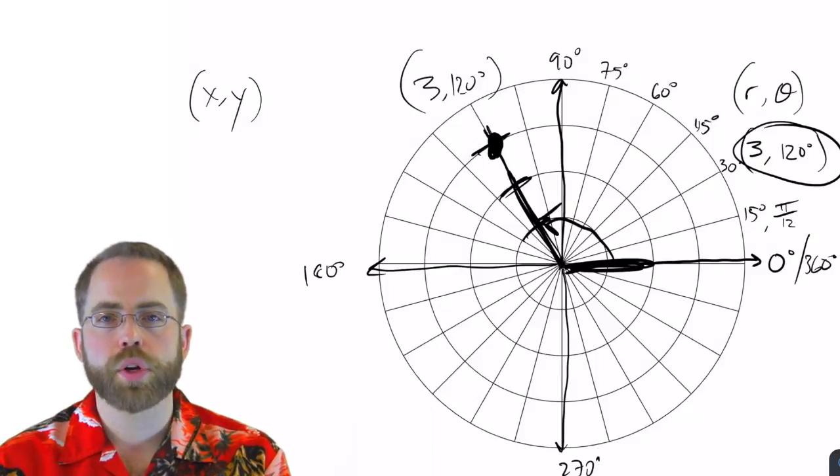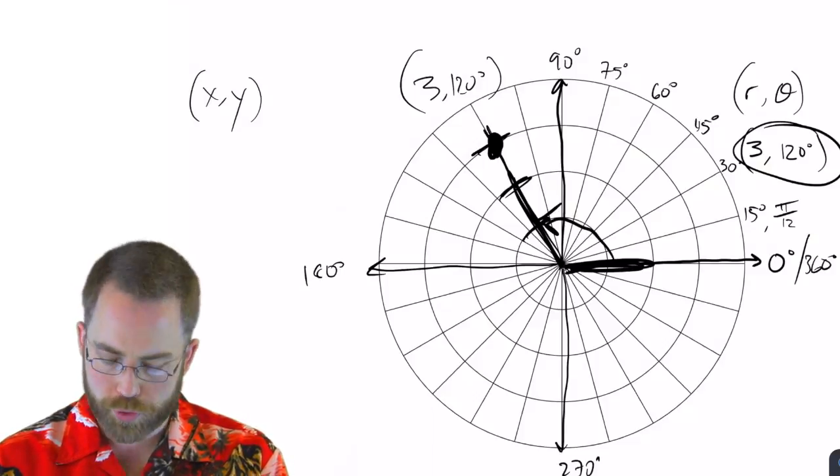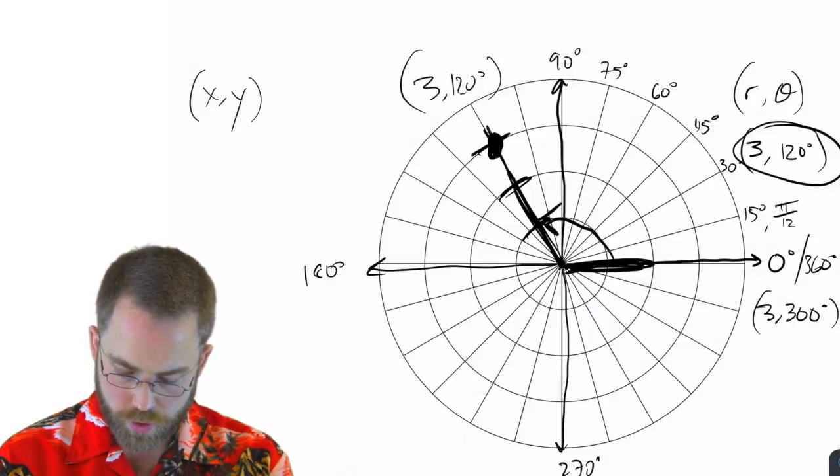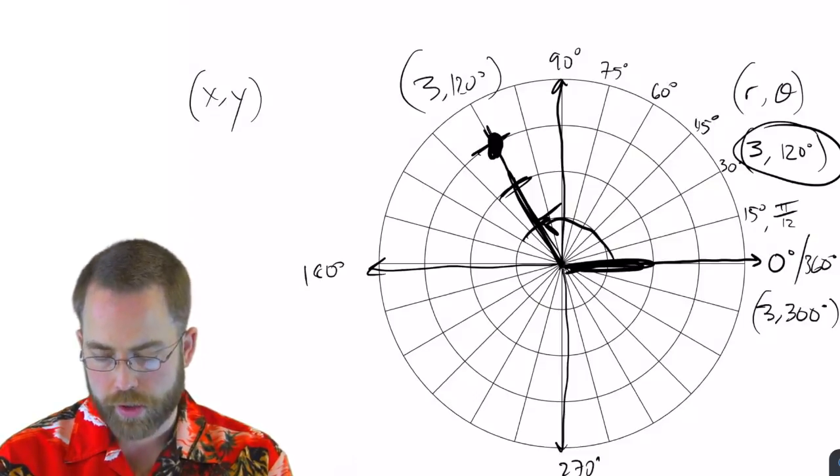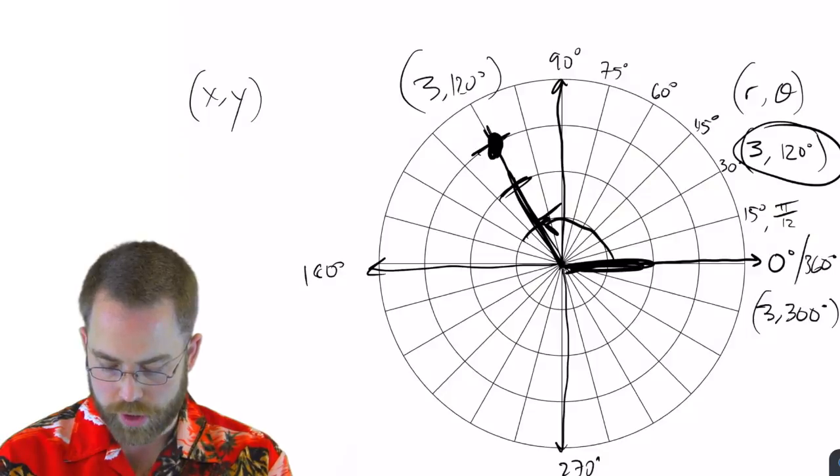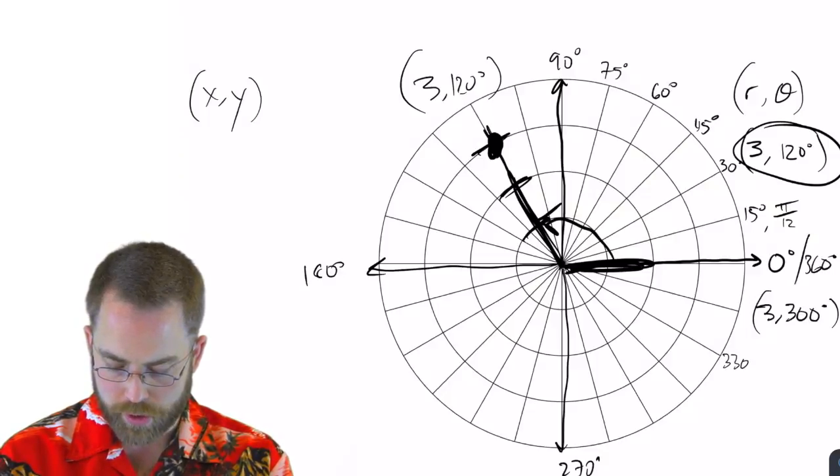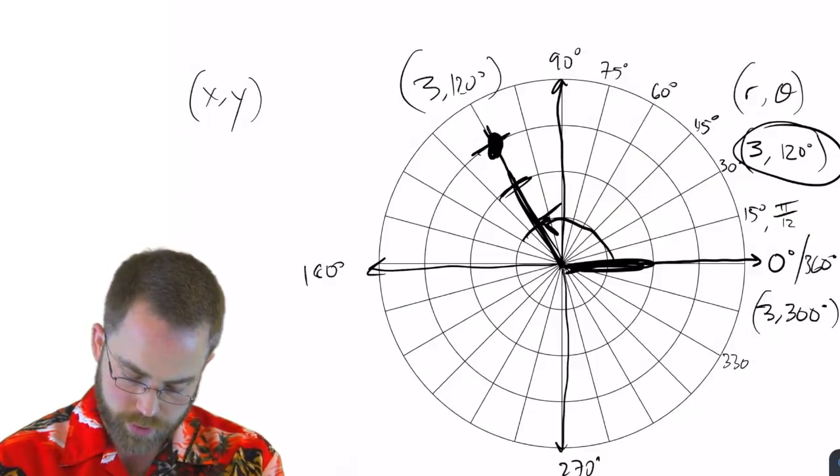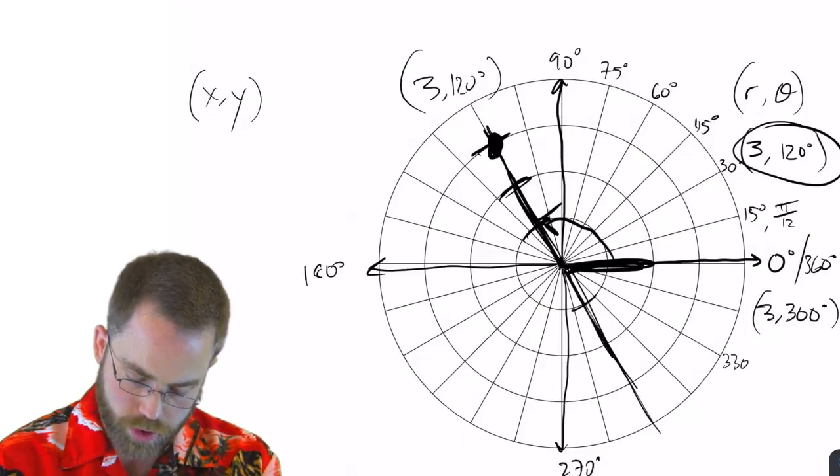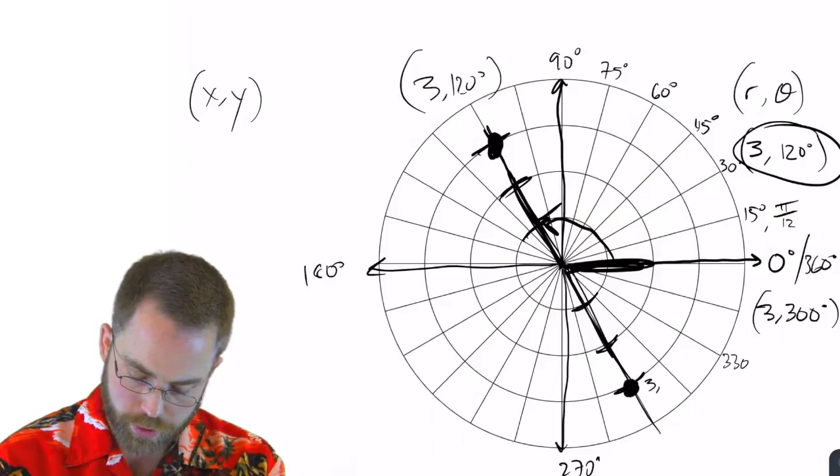Okay. So then let's try another one. Let's try three comma 300. Where's that going to be? All right. So we need to go 360 back. 15 is 345 and 330 is right there and 315 and 300. Okay. So here we are on the 300 spoke and then we walk out one, two, three. So there's the spot right there, 3 comma 300 degrees.